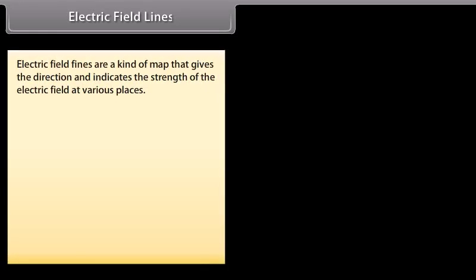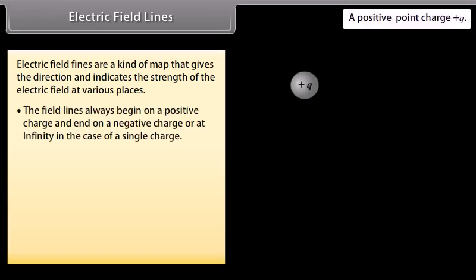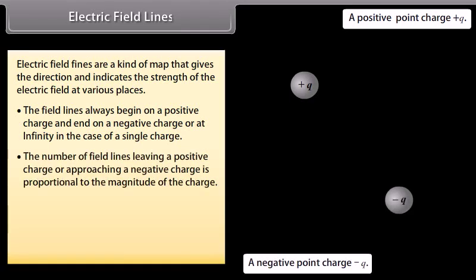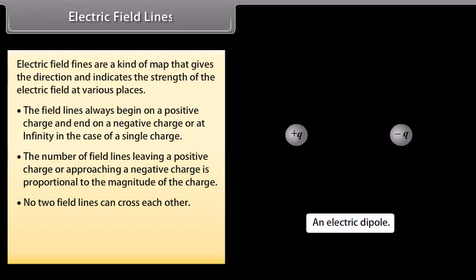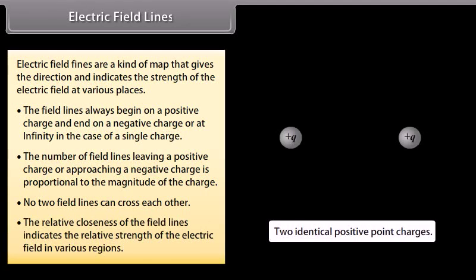Electric field lines are a kind of map that gives the direction and indicates the strength of the electric field at various places. Field lines always begin on a positive charge and end on a negative charge, or at infinity in the case of a single charge. The number of field lines leaving a positive charge or approaching a negative charge is proportional to the magnitude of the charge. No two field lines can cross each other. The relative closeness of the field lines indicates the relative strength of the electric field.